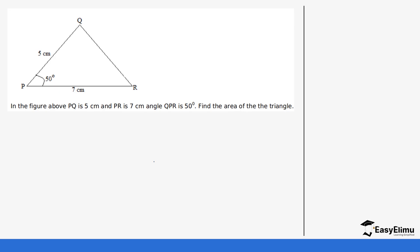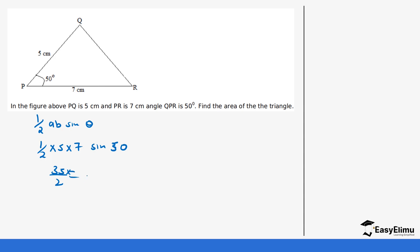Next question: in the figure below, PQ is 5 centimeters, PR is 7 centimeters, and angle QPR is 50 degrees. Find the area of the triangle. Once again we do not have to calculate the height since we have two sides and an angle. So the formula is a half ab sine theta. It's going to be a half, a is 5, b is 7, and then sine 50. 5 times 7 gives 35, divide by 2 which gives us 17.5. So it is 17.5 sine 50.